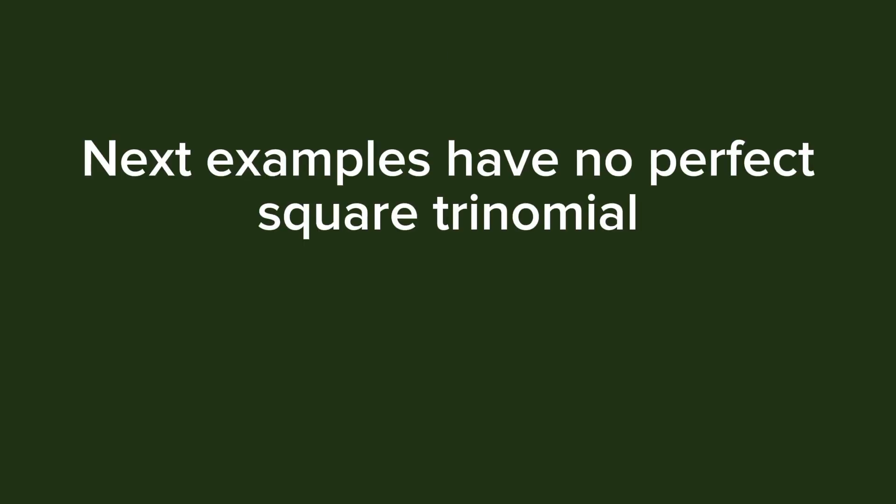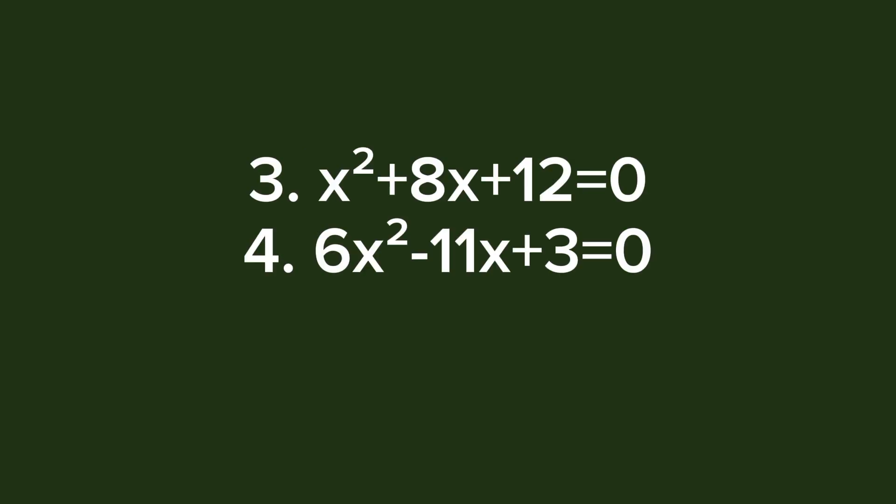Another set of examples has no perfect square trinomial, like: x² + 8x + 12 = 0 where a = 1, and 6x² - 11x + 3 = 0 where a = 6. Here is how to solve these two equations.